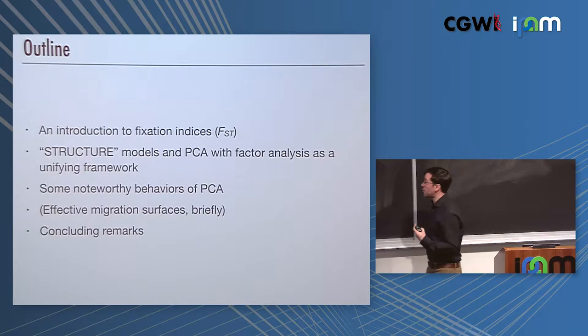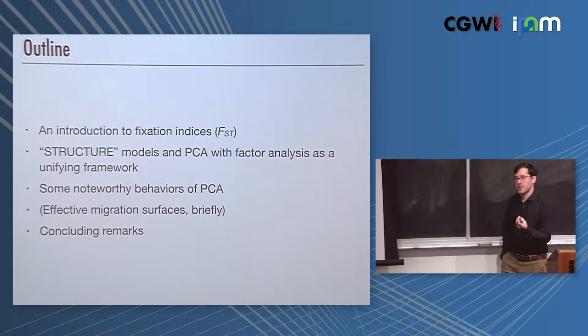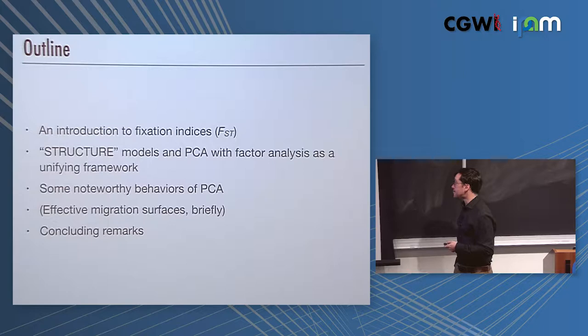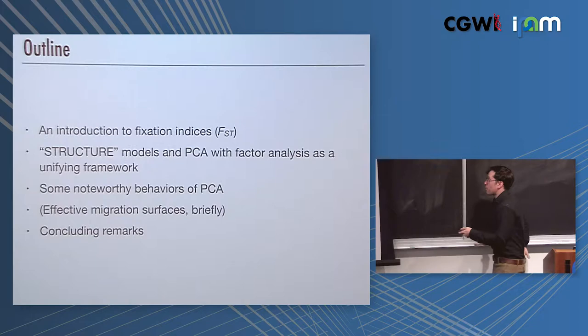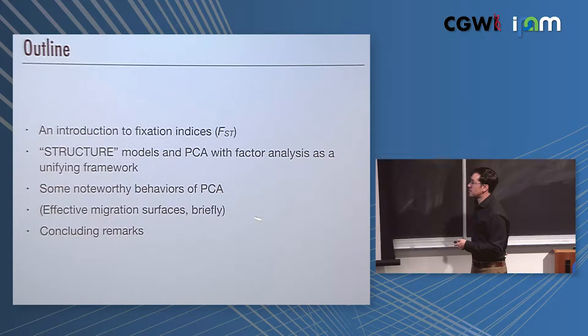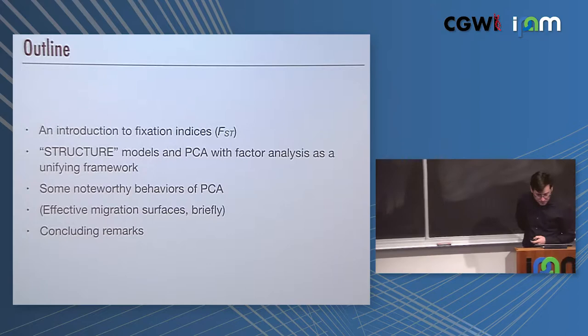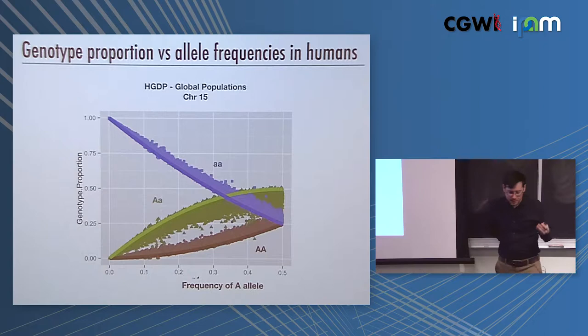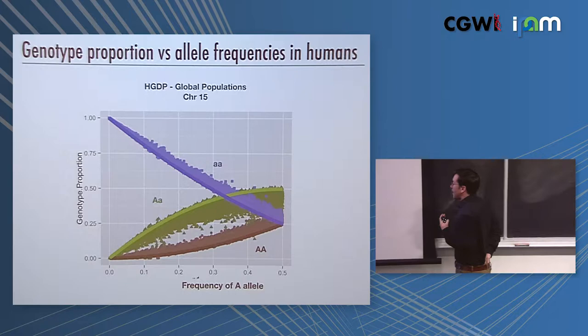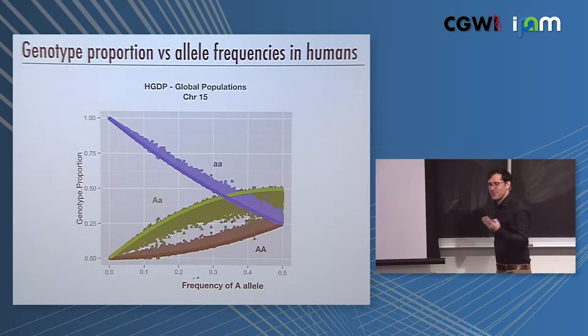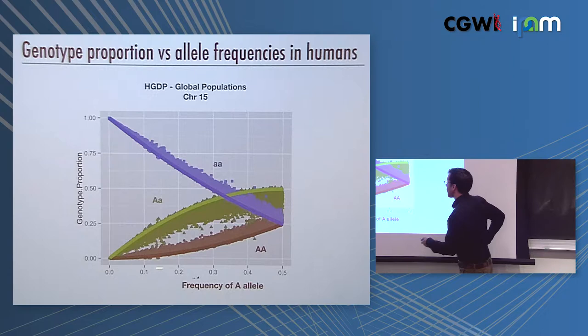This is more of a tutorial talk. I'm going to be giving an introduction to fixation indices, FST, a number that population geneticists use to describe how much differentiation there is. I'm going to talk about Structure models and PCA and connect them in a unifying framework as two forms of factor analysis. I'm going to discuss some noteworthy behaviors of PCA, and then I'll talk about effective migration surfaces briefly. This is a new research aspect of the talk before finishing.